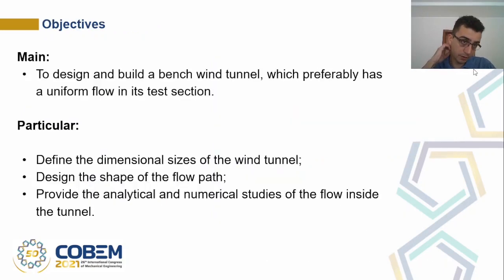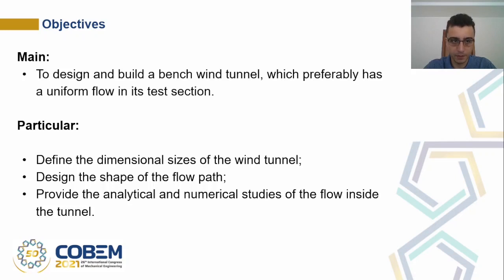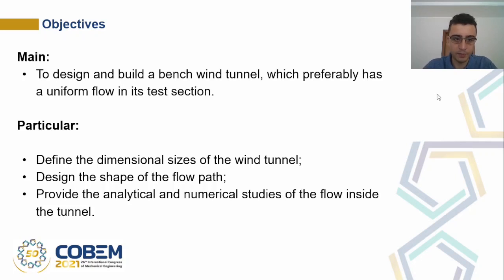The main objective of this work is to design and build a bench wind tunnel which preferably has a uniform flow in the test section. The particular objectives are to define the dimensional size of the wind tunnel, design the shape of the flow path, and provide the analytical and numerical studies of the flow inside the tunnel.